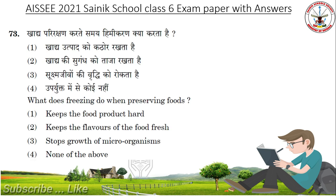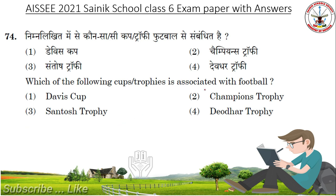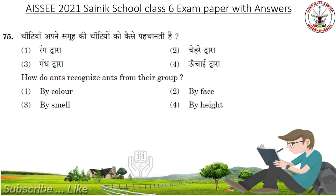What does freezing do when preserving foods? Check the options. Answer is: Stops growth of microorganisms. Which of the following cup trophies is associated with football? Options: Davis Cup, Champions Trophy, Santos Trophy, Diodo Trophy. Answer is Santos Trophy. How do ants recognize ants from their group? Options: By color, by face, by smell, by height.